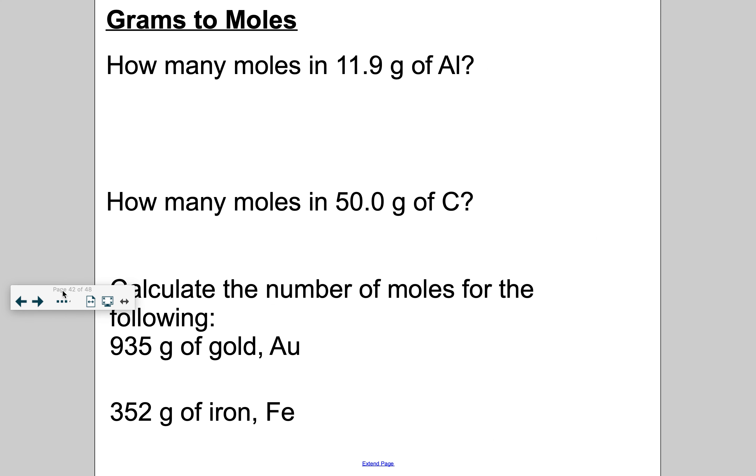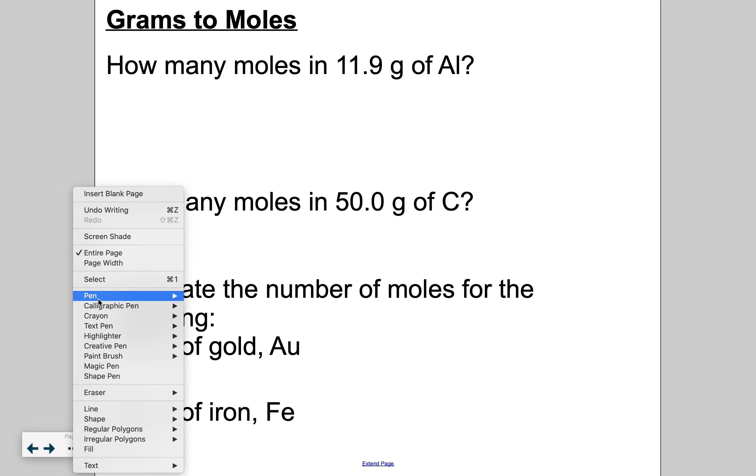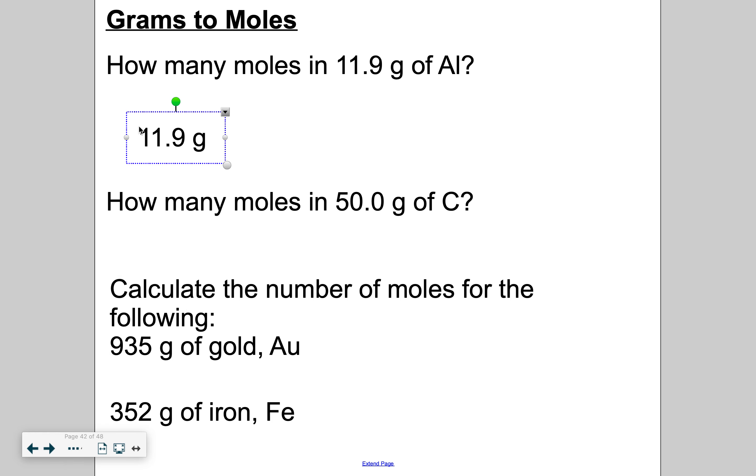This time, let's go the other way. Grams to moles. How many moles in 11.9 grams of aluminum? So I'm going to start with what I'm given. I set up my conversion factor. I'm in grams, so that means the molar mass is going to go on the bottom. So the molar mass of aluminum is 26.98 according to the periodic table. And that is equivalent to one mole of aluminum. So 11.9 times 1 divided by 26.98, I get 0.44106. Three sig figs, so I don't need to round. And then my answer is 0.441 moles of aluminum.